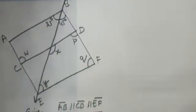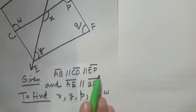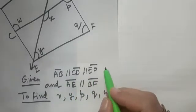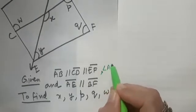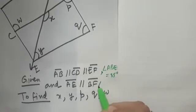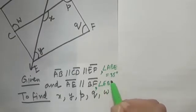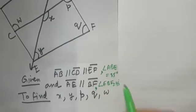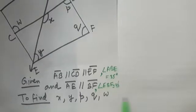First thing is we are going to write down what is given. So here I have written: AB parallel to CD parallel to EF, AE parallel to BF, and also angle ABE is 35 degrees and angle EBF is 45 degrees. And we need to find X, Y, P, Q, W.